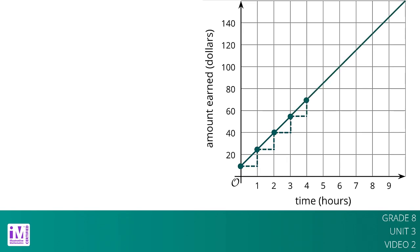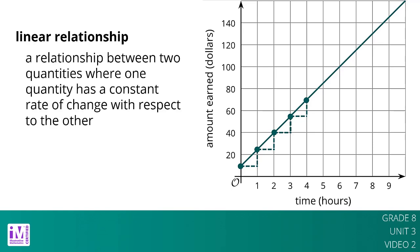This is an example of a linear relationship between time and amount earned. A linear relationship is any relationship between two quantities where one quantity has a constant rate of change with respect to the other.